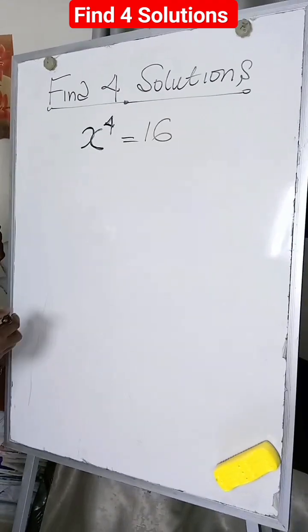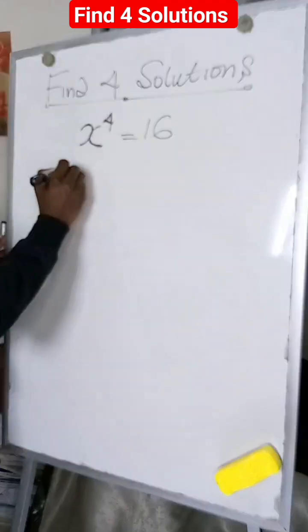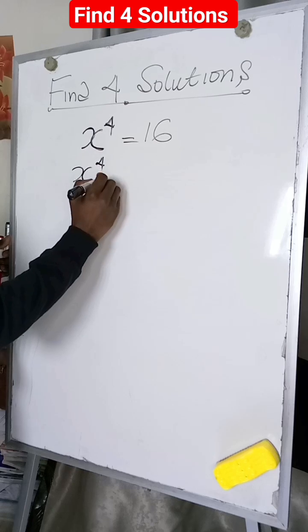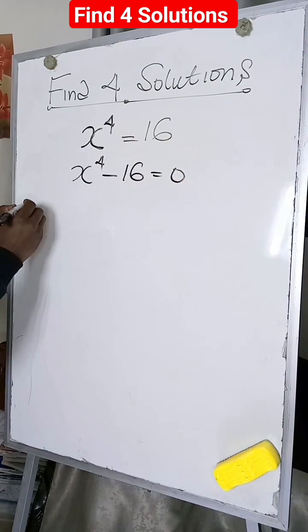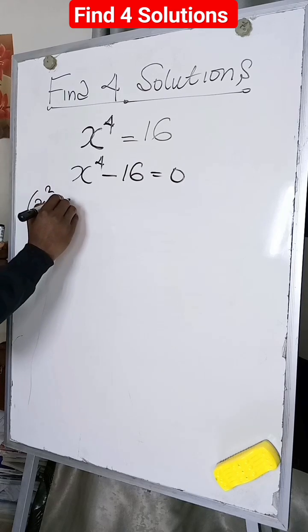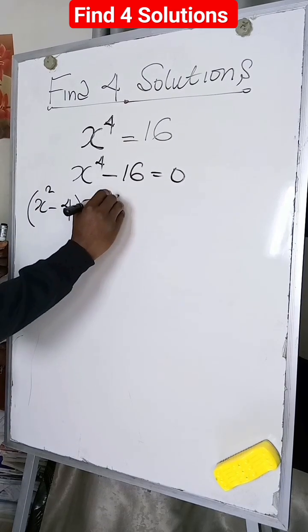To find four solutions to this exponential equation, we are going to factor this to be equal to zero. We'll factor this to give us x squared minus 4 multiplied by x squared plus 4 equal to zero.